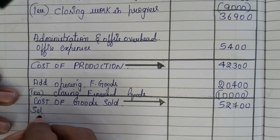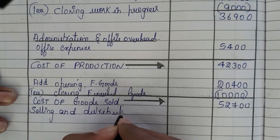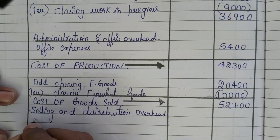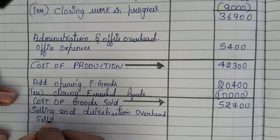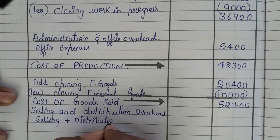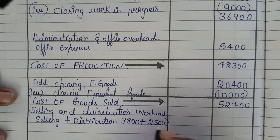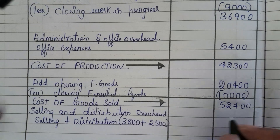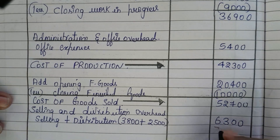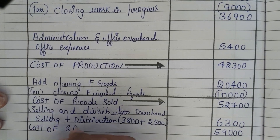For cost of goods sold we add selling and distribution overhead. Selling expenses is 3,800 and distribution expenses is 2,500, totalling 6,300. Adding 52,700 plus 6,300 gives us 59,000, which is our cost of sales.